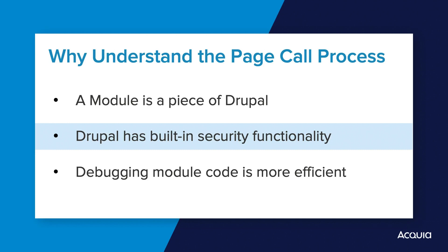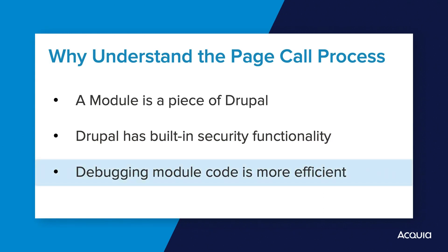As a concluding example, when you create a module, often something will go wrong — at least one piece of code doesn't work. A bug! When you debug code in a module, you need to know what the rest of Drupal is doing during that request lifecycle, because it could be another module interacting with your module in an unexpected way which is causing that bug.